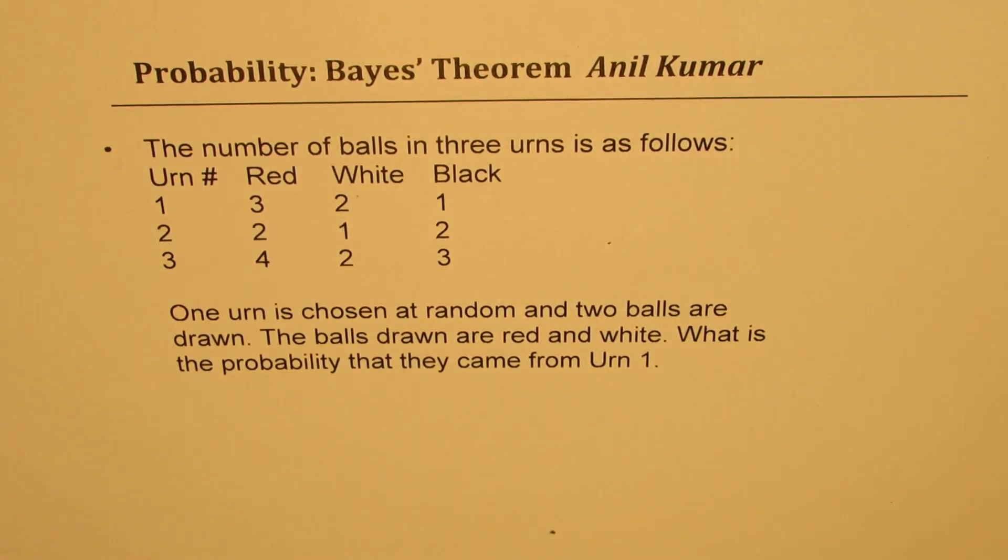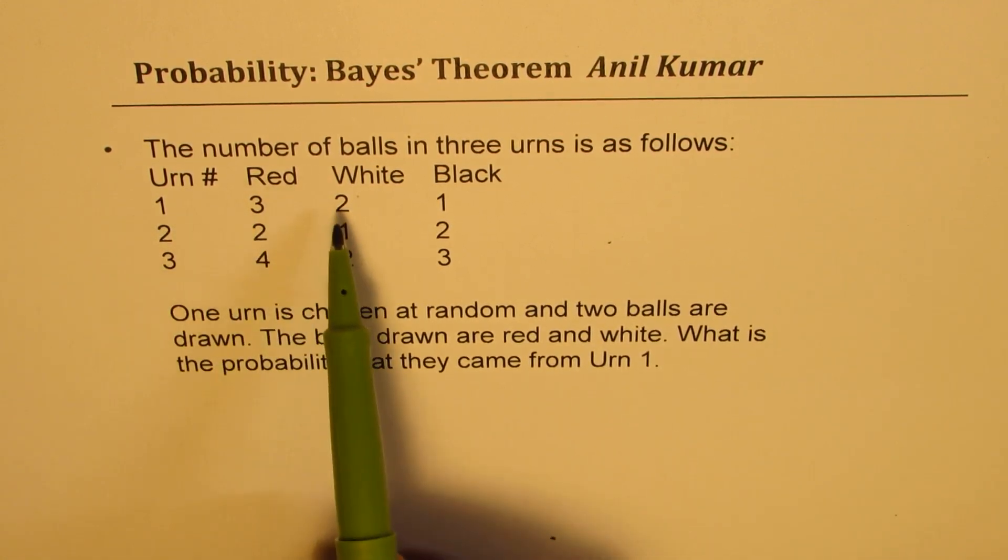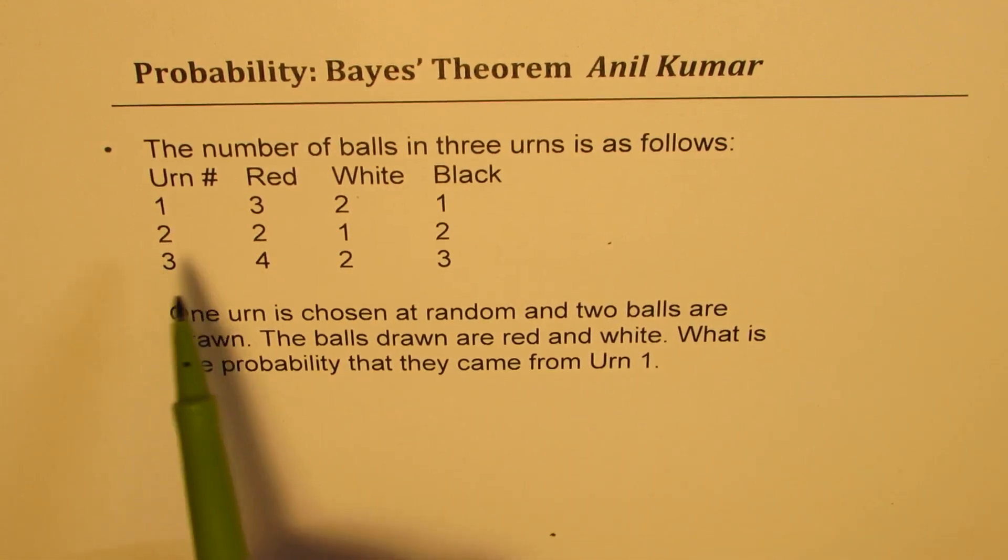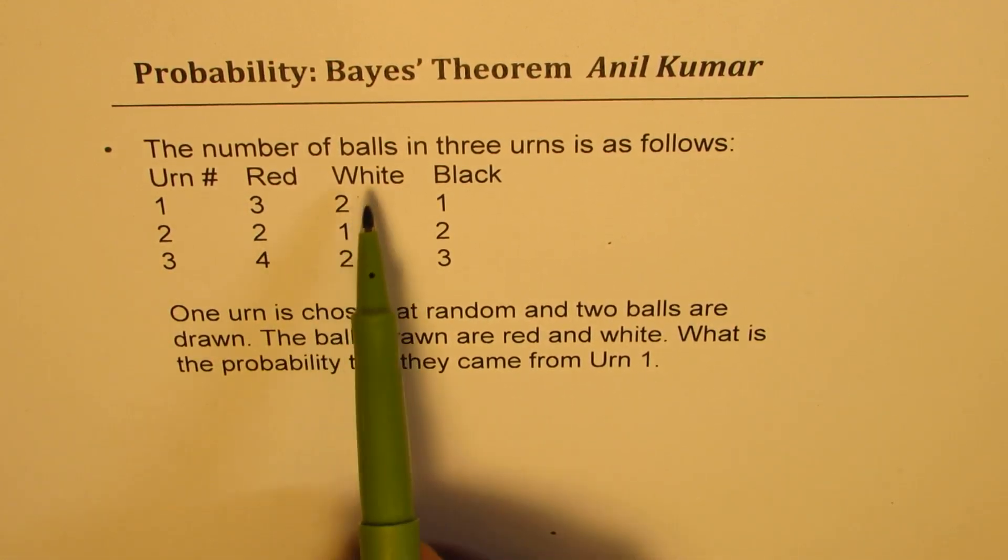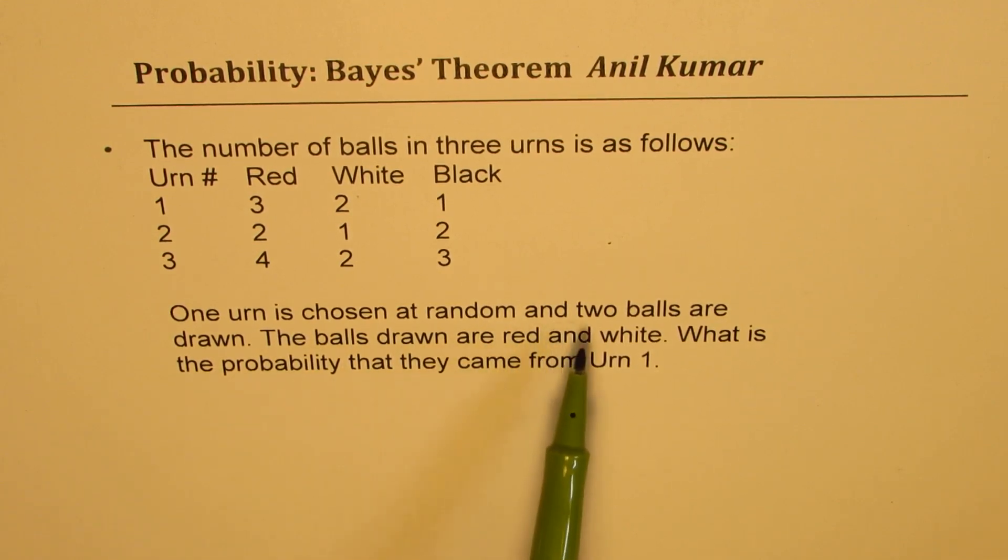The question here is, the number of balls in three urns is as follows: urn number one has three red balls, two white balls, one black ball. Urn two has two red balls, one white and two black. And the third one has four red, two white and three black. One urn is chosen at random and two balls are drawn. The balls drawn are red and white. What is the probability that they came from urn one?